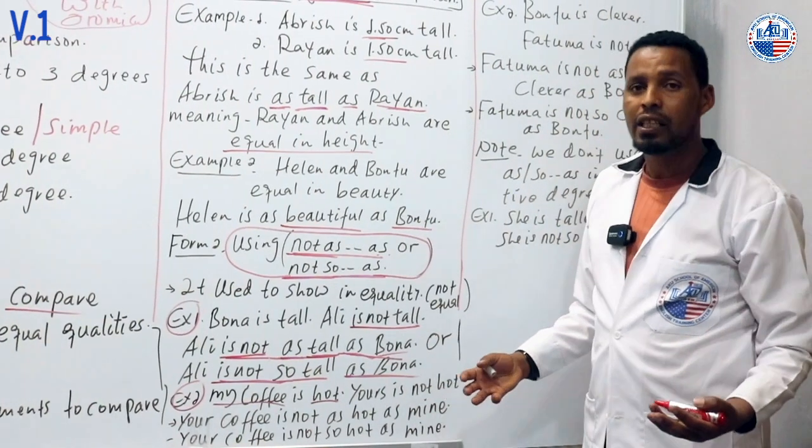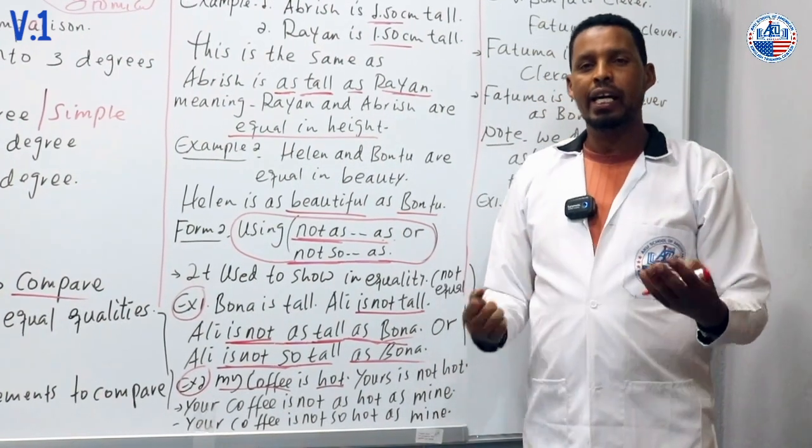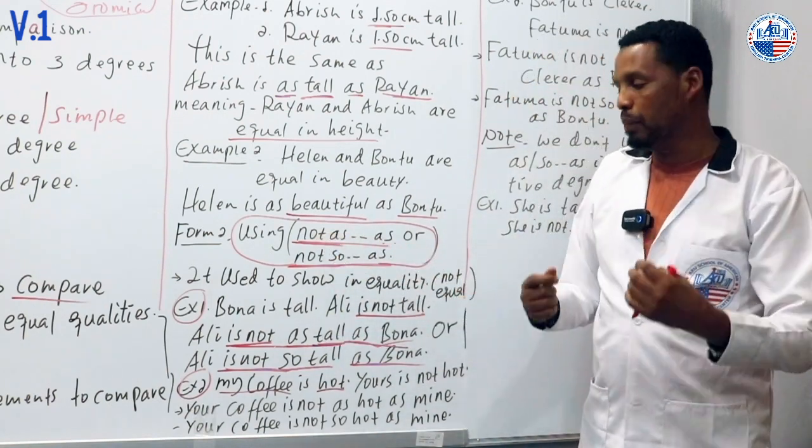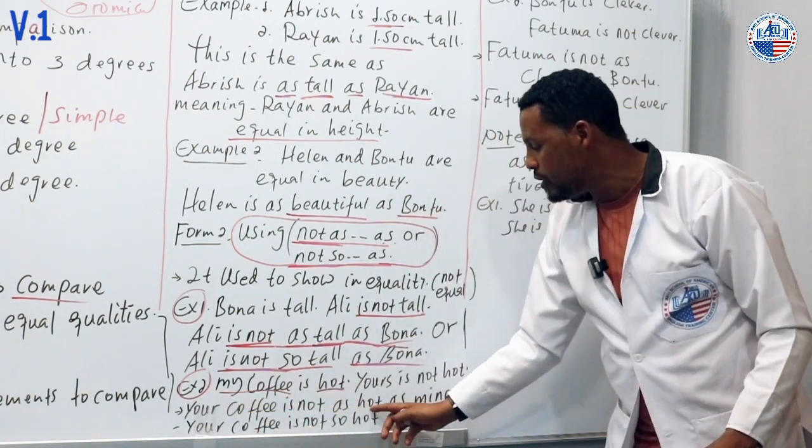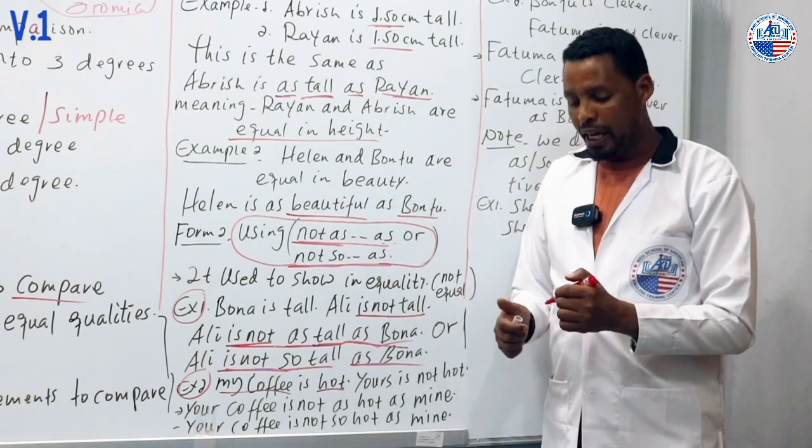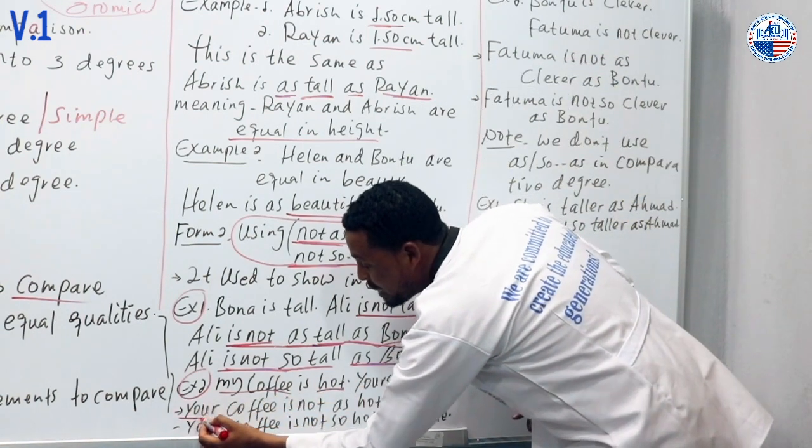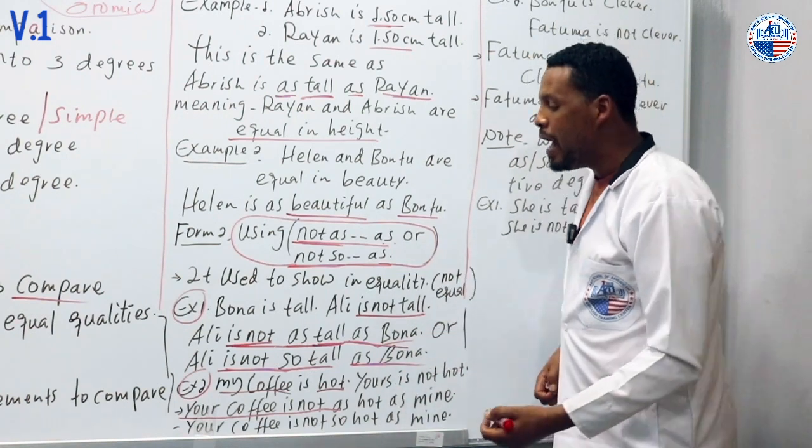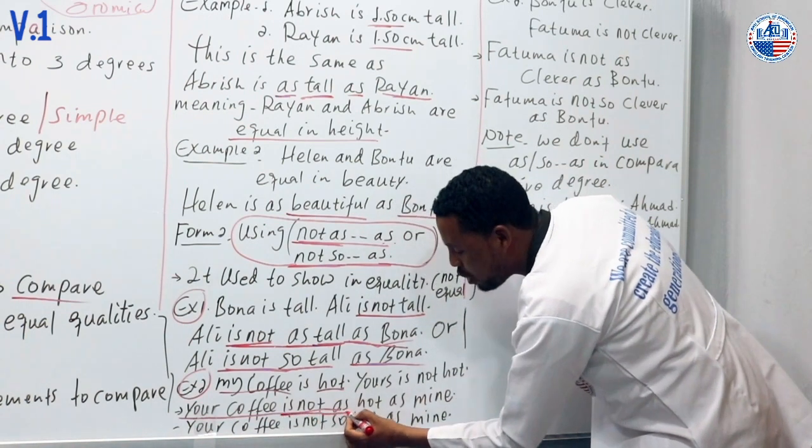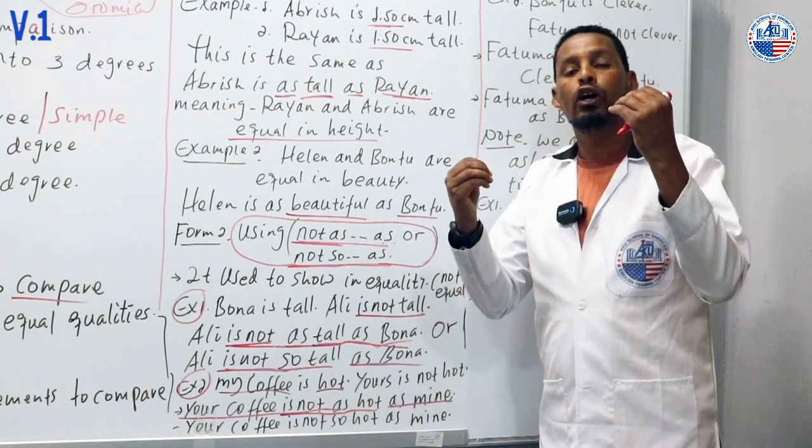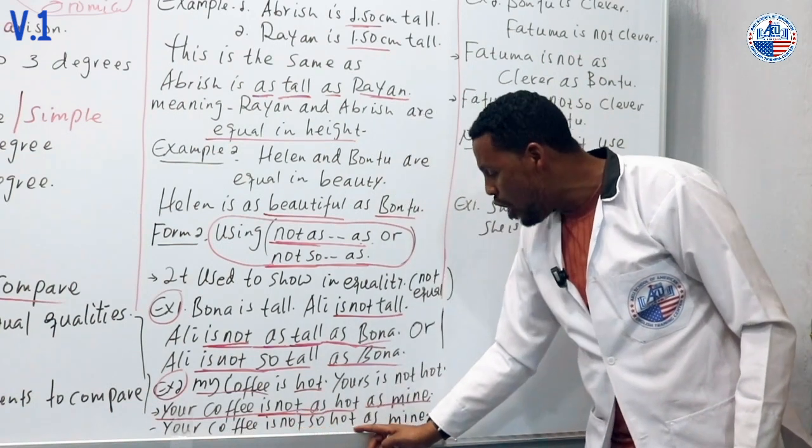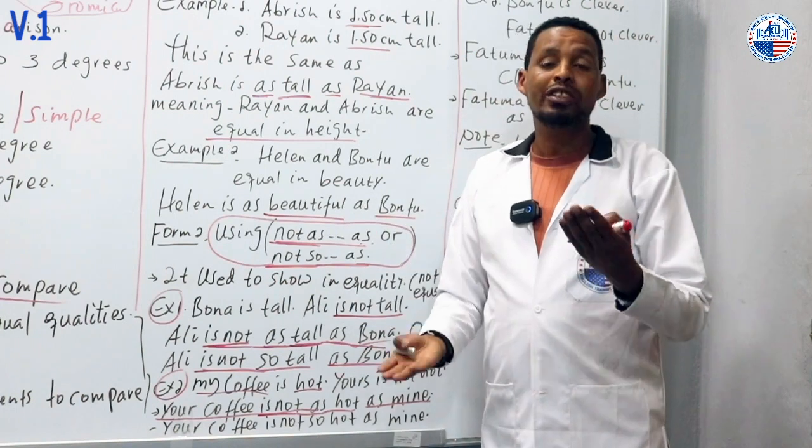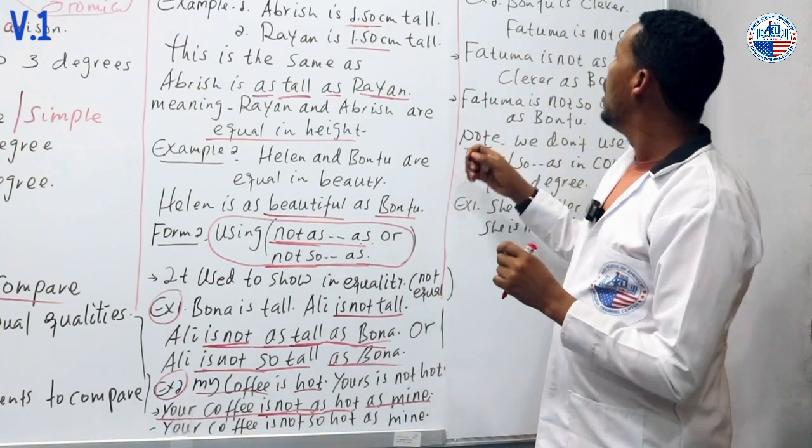Another example: Your coffee is not as hot as mine. This means my coffee is hotter than your coffee. We can also say: Your coffee is not so hot as mine. Both forms are correct for showing inequality.